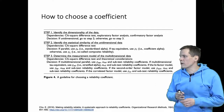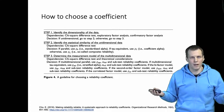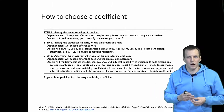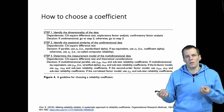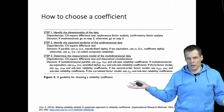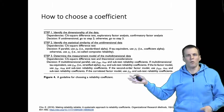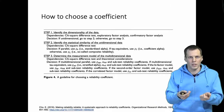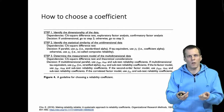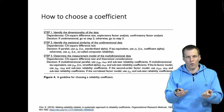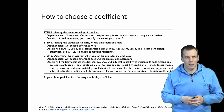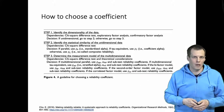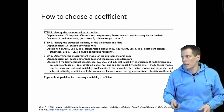Cho also recommends stratified alpha when factor analysis cannot be calculated, but that's a somewhat problematic recommendation because you should always understand the reason for estimation difficulty and fix it rather than work around the problem. Of course, sometimes that's not possible, and in those cases stratified alpha could be useful.